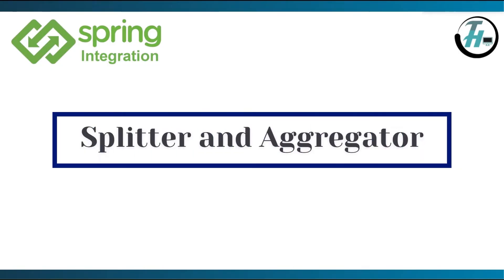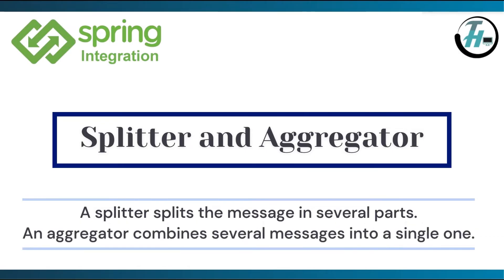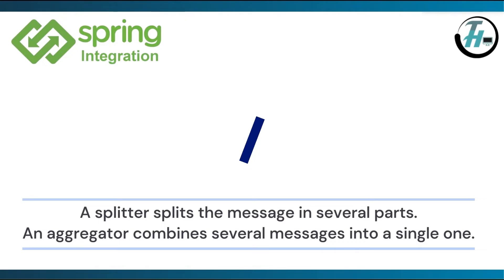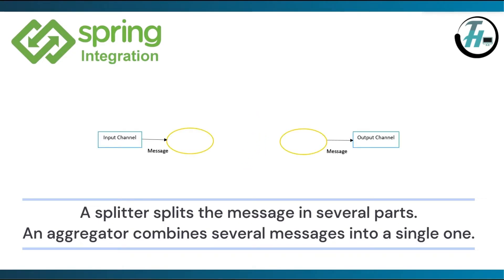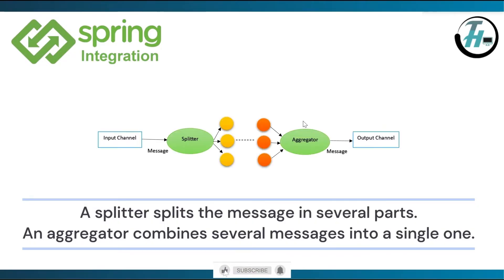Next, splitter and aggregator. A splitter splits the message into several parts and an aggregator combines several messages into a single one — both work hand in hand. The message goes from the input channel to the splitter component. This component splits the message into several parts. These individual parts are processed. Then, all the message parts go to the aggregator component, which combines all of them into a single message, and this message is then sent to the output channel.